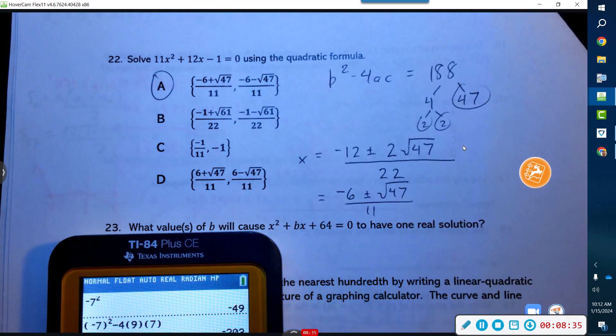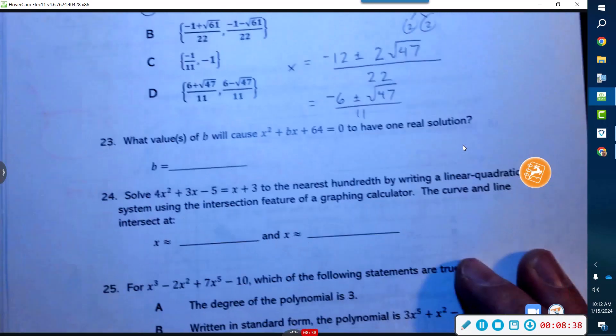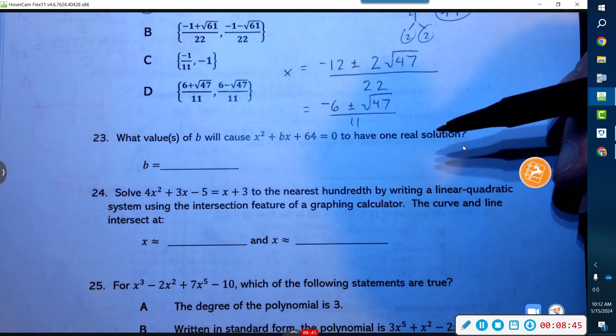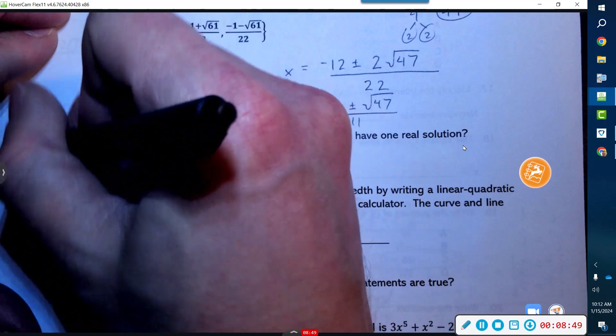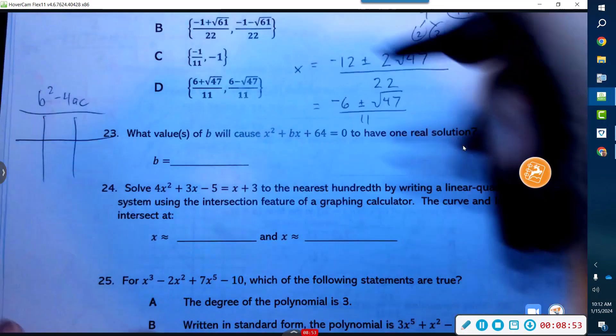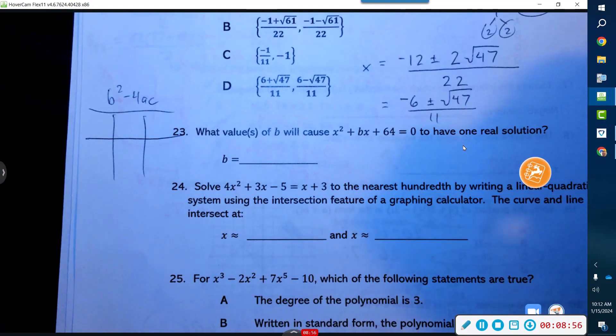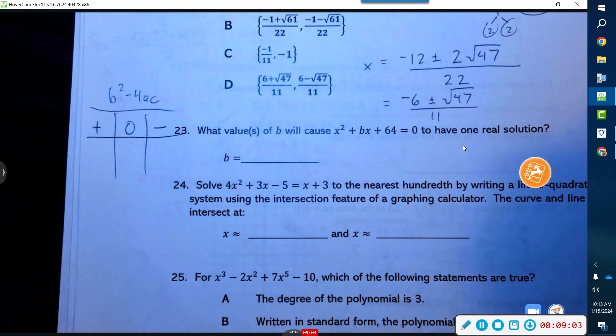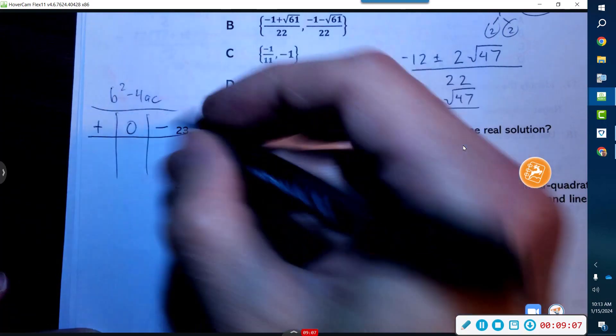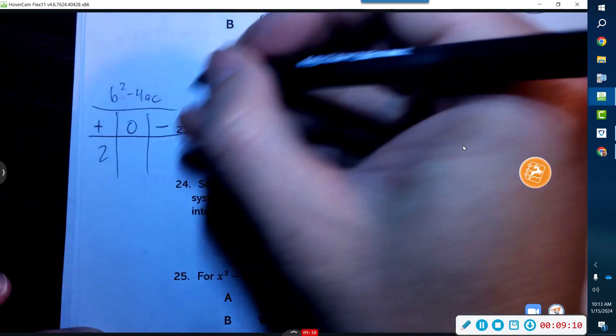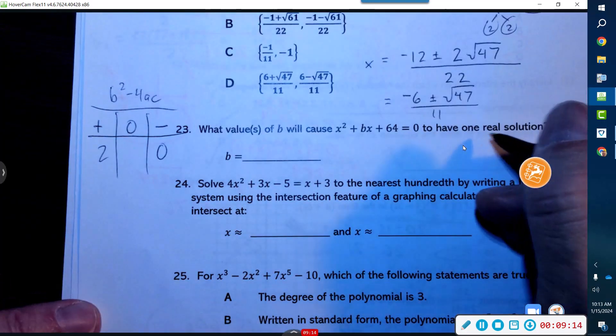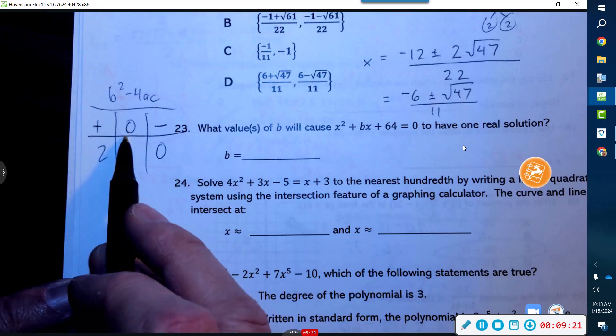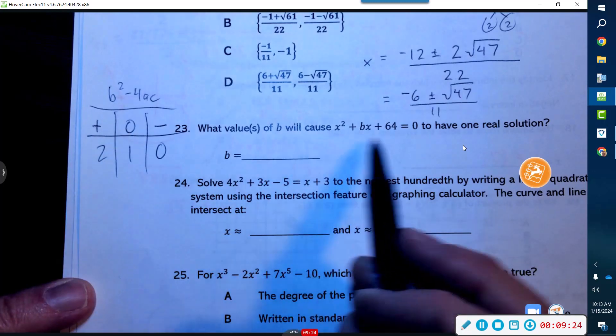When will this guy have one real solution? We had to remember discriminants: b² − 4ac. This is a classic SAT question. You can have positive, you can have zero, and you can have negative. When your discriminant is positive you will have two answers. If your discriminant is negative you will have zero real answers. And in order to have one real solution, that means that your discriminant has to equal zero.